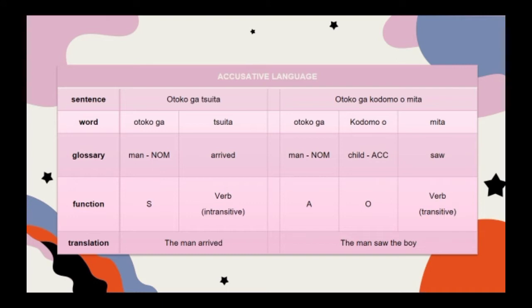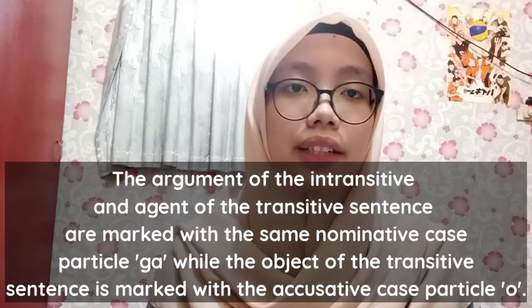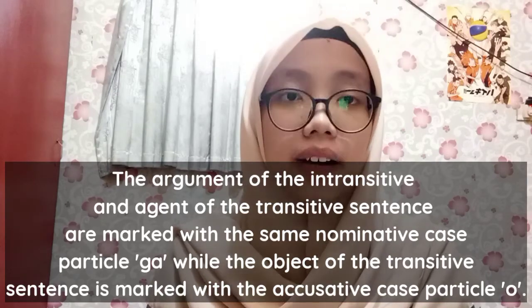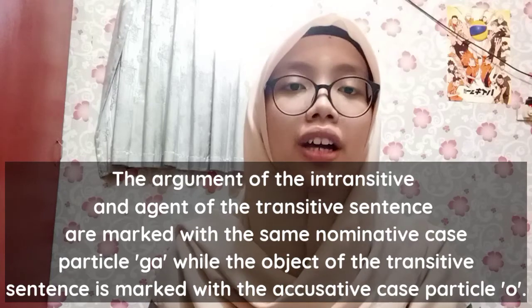Since Japanese is an accusative language, the direct object of a transitive verb is treated differently from the single argument of an intransitive verb and the subject of a transitive verb. This can be seen from the particle used in both subjects, that is particle ga, while the object of the transitive verb uses particle o. We can conclude that the argument of the intransitive and the agent of the transitive sentence are marked with the same nominative case — particle ga — while the object of the transitive sentence is marked with the accusative case, that is particle o.